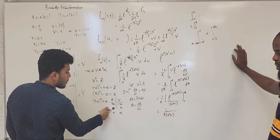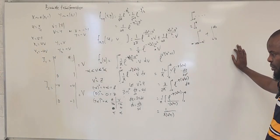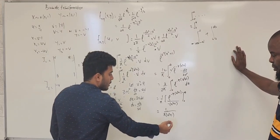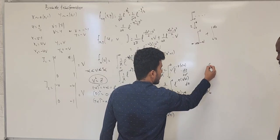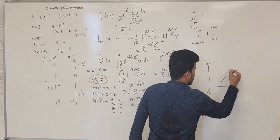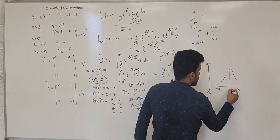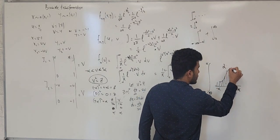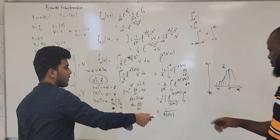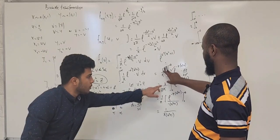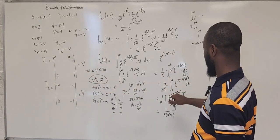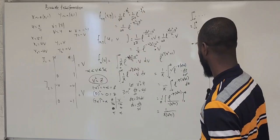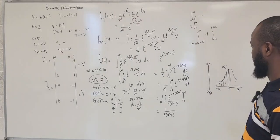The 2 is still going to be there. So you have one over pi times one over u squared plus one. The 2 is coming out, but then you still have one over pi. It's still one over pi times one over u squared plus one.